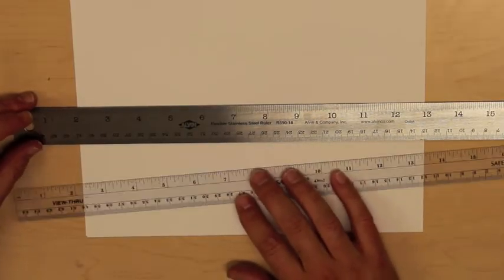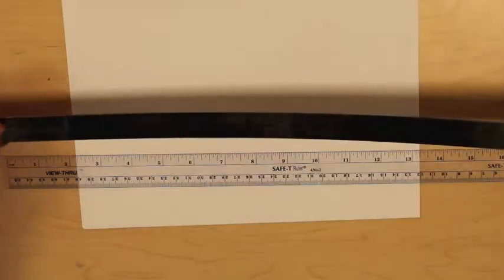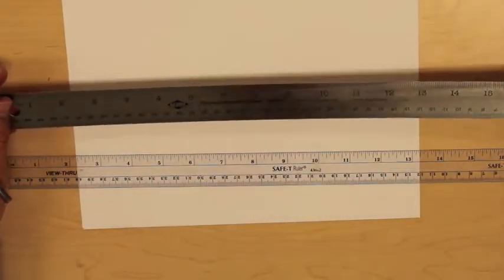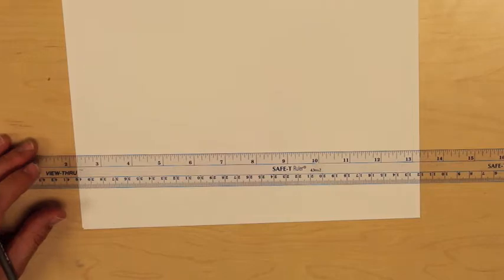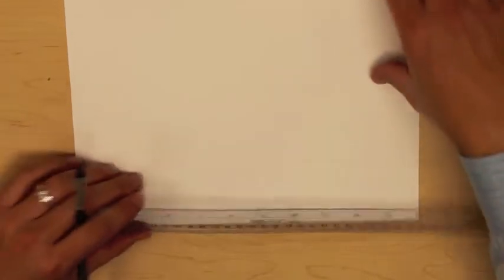It does slide around a little bit more easily than the stainless steel ruler with the cork backing. Most of the time I actually use a stainless steel ruler, but for today's purposes I'm going to use this clear one so that we can see through to the paper.